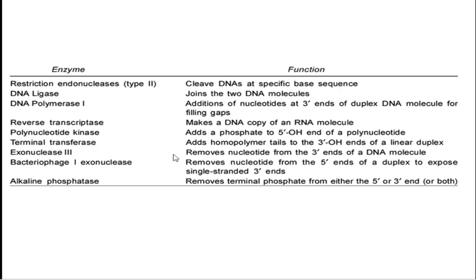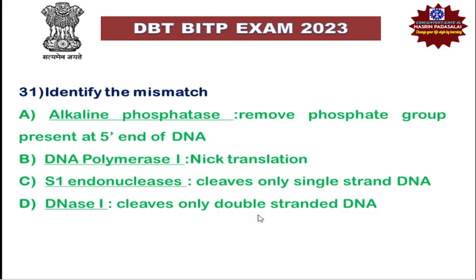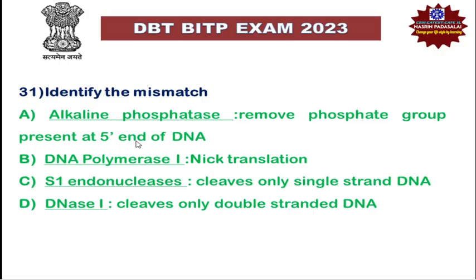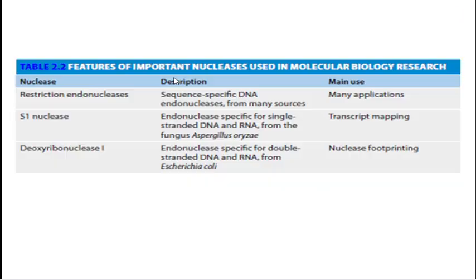Other enzymes: exonuclease III removes nucleotides from the 3' end of a DNA molecule; exonuclease I removes nucleotides from the 5' end of the DNA duplex. Alkaline phosphatase removes the terminal phosphate group from either the 5' end, the 3' end, or both ends of DNA. So here, DNA polymerase I used for nick translation is correct; S1 endonuclease cleaving single-stranded DNA is correct; DNase I cleaving double-stranded DNA is correct. However, the description of alkaline phosphatase as removing phosphate only from the 5' end is a mismatch — it can remove phosphate from both the 5' and 3' ends.